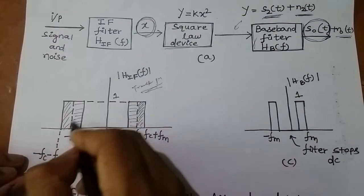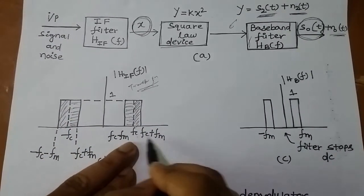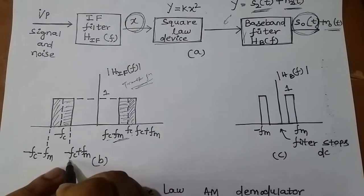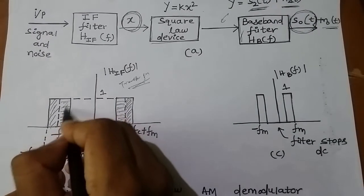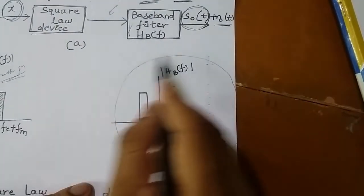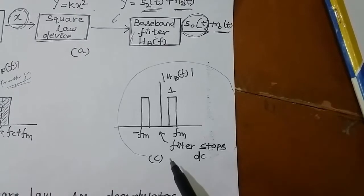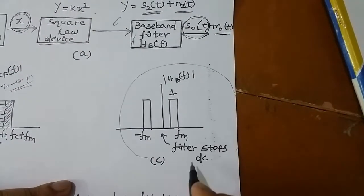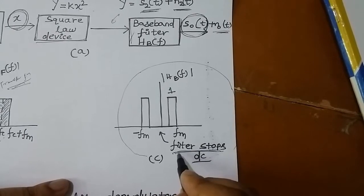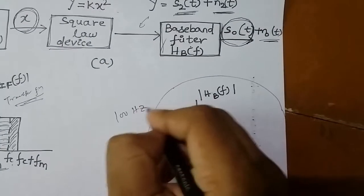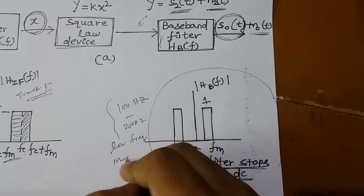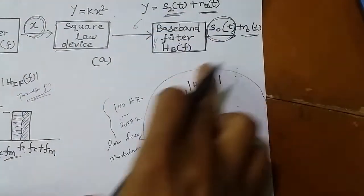The IF filter has an upper sideband from fc−fm to fc+fm and a lower sideband from −fc to −fc+fm. The baseband filter transfer function filters the modulating signal. We assume the modulating signal contains no DC, or the filter filters out the DC part — for example, frequencies from 100 Hz to 300 Hz.